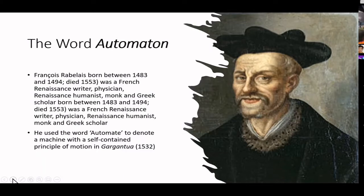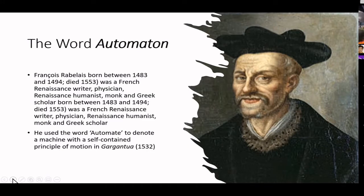The word 'automata' was reported by François Rabelais, the French Renaissance writer, who in his book Gargantua defined the term 'automate' to denote a machine with a self-contained principle of motion. We are still not talking about robots — even in the 14th or 15th century. This concept of automata later bifurcated into multiple disciplines: it influenced the history of artificial intelligence, research on human psychology, and more. But on the early days, automata was defined simply as a machine with a self-contained principle of motion.